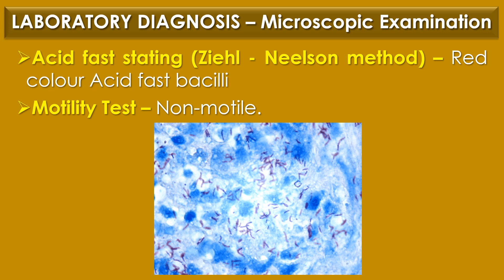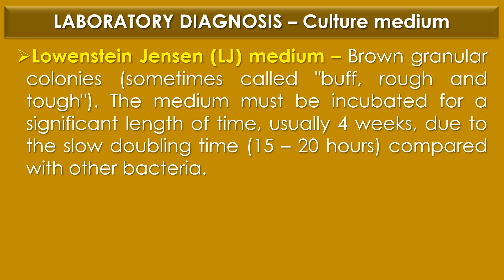Laboratory diagnosis of Mycobacterium tuberculosis: The first diagnostic method is microscopic examination. Under acid-fast staining, Mycobacterium tuberculosis is observed as red-colored acid-fast bacilli. In the motility test, it is non-motile in nature. For colony morphology, Lowenstein-Jensen medium or LJ medium is the selective medium. On LJ medium, Mycobacterium tuberculosis appears as brown granular colonies, sometimes called buff, rough and tough colonies. This medium must be incubated for usually 4 weeks due to the slow doubling time of Mycobacterium tuberculosis. The doubling time is 15 to 20 hours.